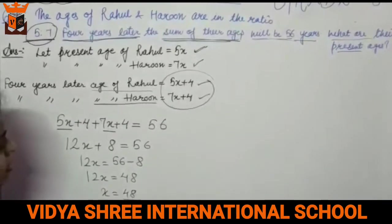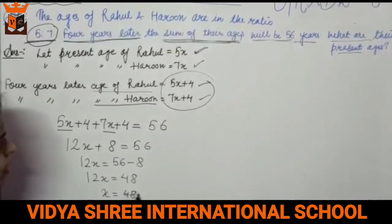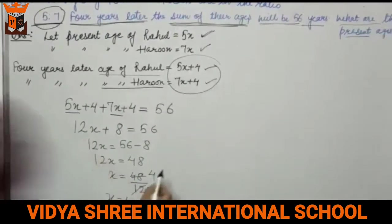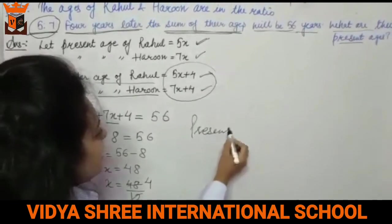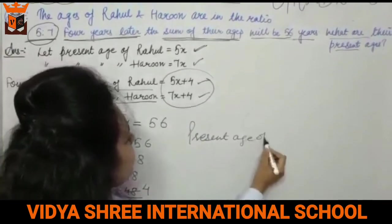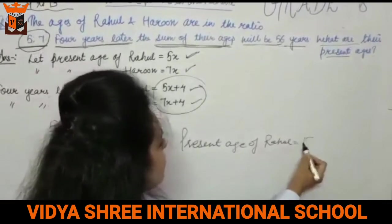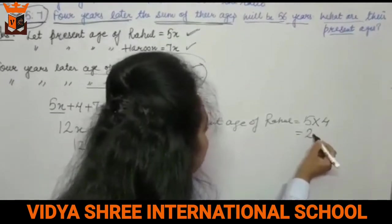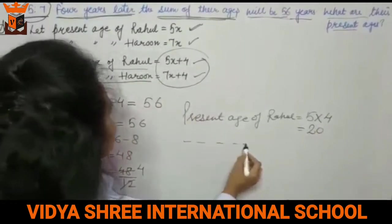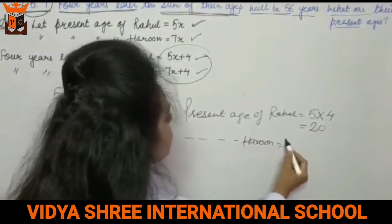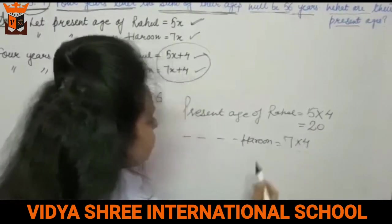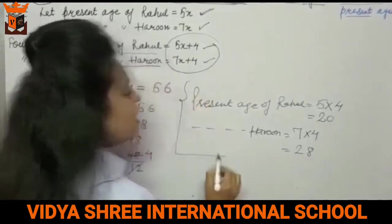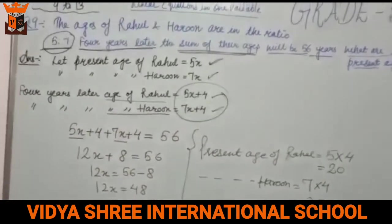So x equals 48 divided by 12. Cancelling 12, x comes out to 4. So the present age of Rahul, which was 5x, is 5 times 4 equals 20. And the present age of Harun, which was 7x, is 7 times 4 equals 28. So this is the answer. Now let's move to the next question.